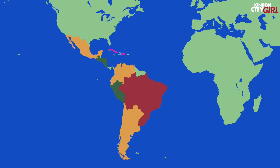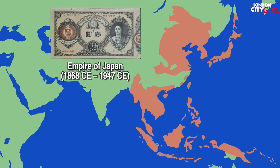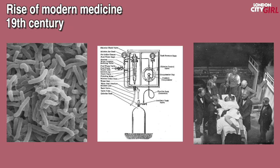From 1861 CE to 1865 CE the American Civil War took place. The conflict was the result of a long-standing disagreement over the institution of slavery. A collection of southern states attempted to break away from the Union and when the Union won slavery was made illegal, delivering a crushing blow to the global slave trade. Between 1868 CE to 1947 CE the Empire of Japan rose to prominence and aimed to dominate Asia and the Pacific leading to conflict with China. The 19th century and beyond saw the rise of modern medicine. The germ theory of disease led to more effective treatments and public health measures such as better sanitation as well as powerful new techniques such as anaesthesia moved medical science forward.